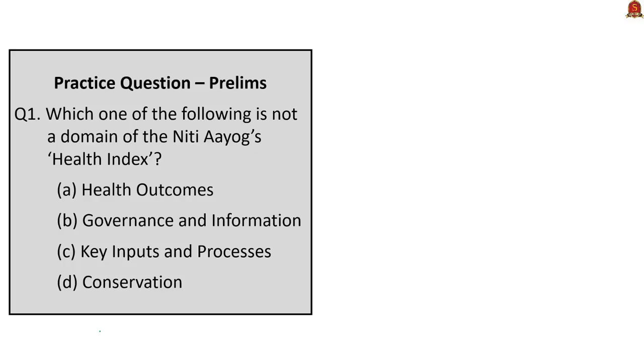Which one of the following is not a domain of NITI Aayog's health index? They have given four options: health outcomes, governance and information, key inputs and processes, and conservation.